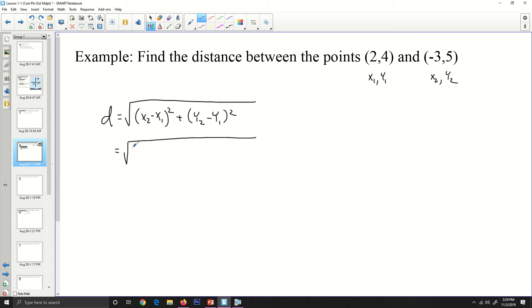My x2 is negative 3 minus 2 quantity squared plus the y2 is 5 minus 4 quantity squared. Let's simplify that just a little bit, so I get negative 5 squared, negative 5 squared is 25, and I get 1 here. 1 squared is 1, so I get the square root of 26, and the factors of 26 are 1, 2, 13, and 26, none of which are perfect squares, so we're going to leave that as our most reduced answer.